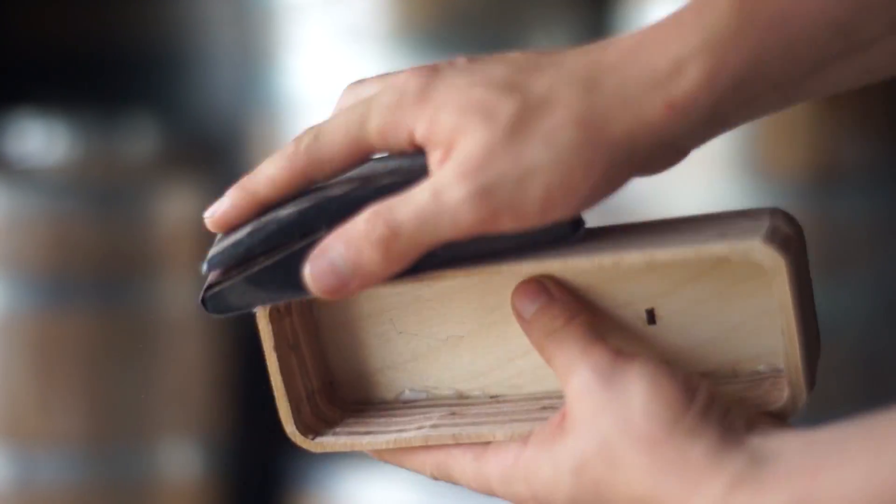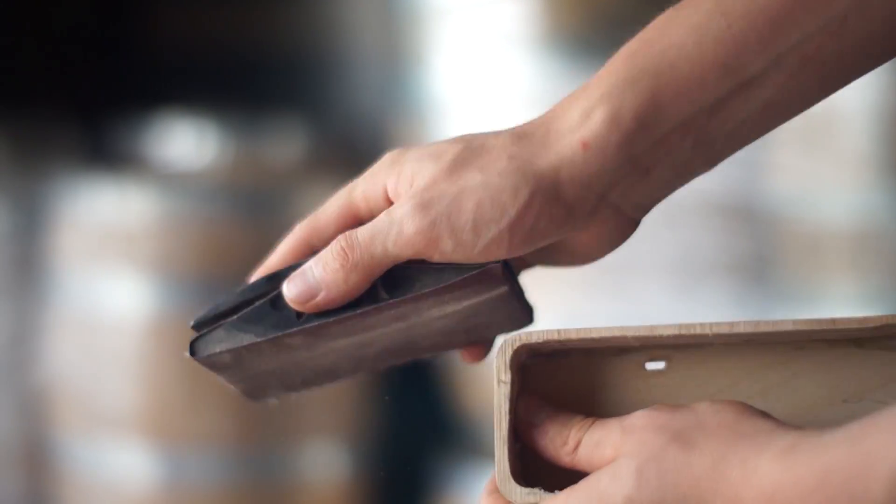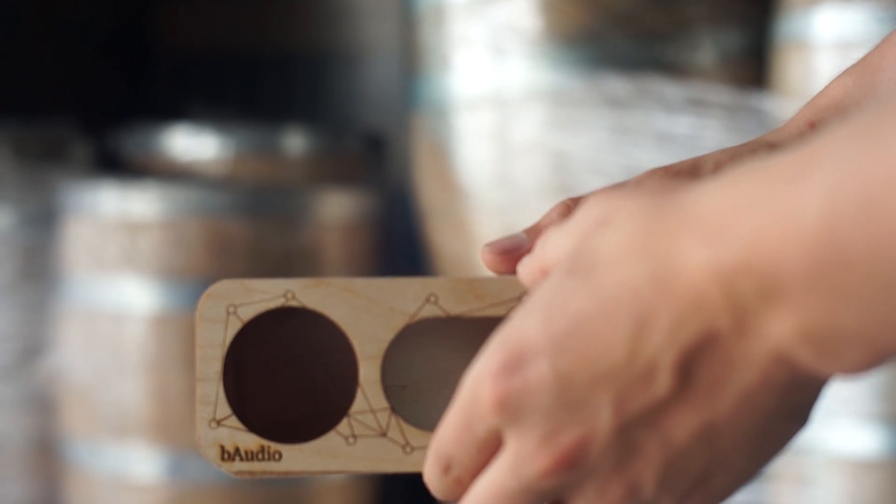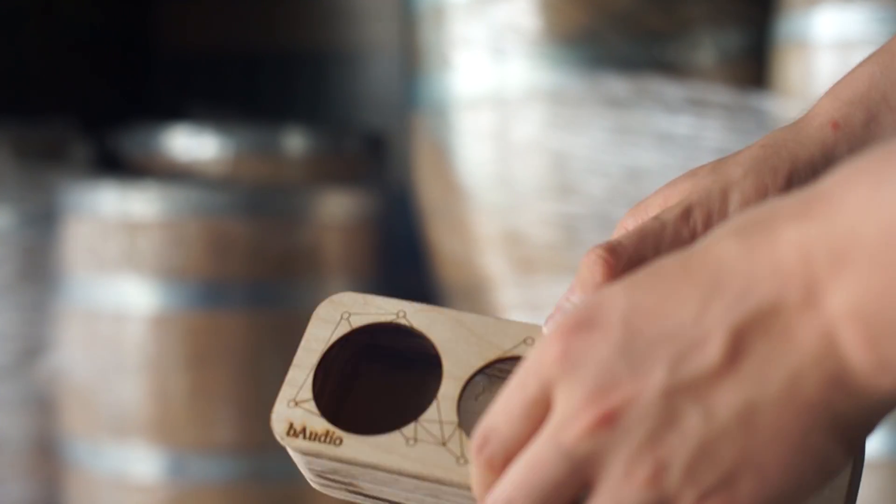So once it's dry we're going to sand it down and make sure it's smooth on the sides and the corners. We're also going to make sure that our front plate is flush with the rest of the enclosure so it might need sanding down as well.